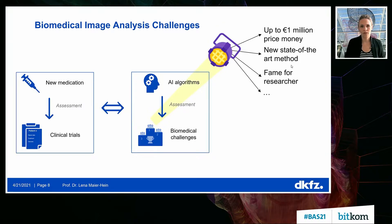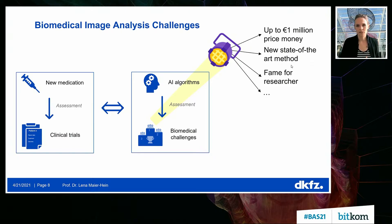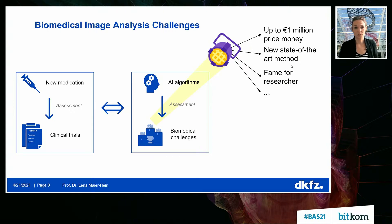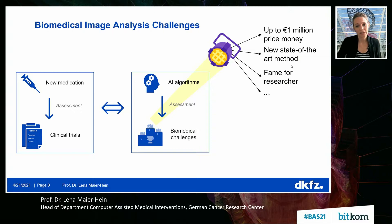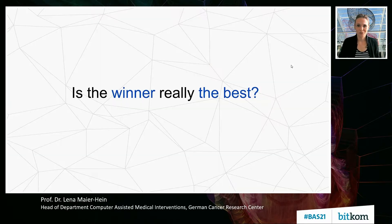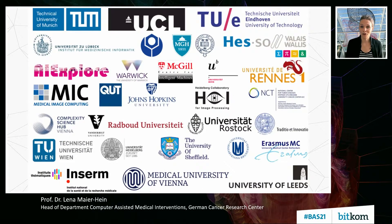As you know, AI algorithms are typically validated in international competitions — so-called challenges — just like you would validate new medication in clinical trials. In these competitions, participants work on identical data sets and a lot of attention is given to the winner, including prize money, fame, and so on. A few years ago, speaking on behalf of the MICCAI Society and their working group, we started asking ourselves: is the winner really the best? This question was answered in a large consortium — we analyzed more than 500 individual competitions.